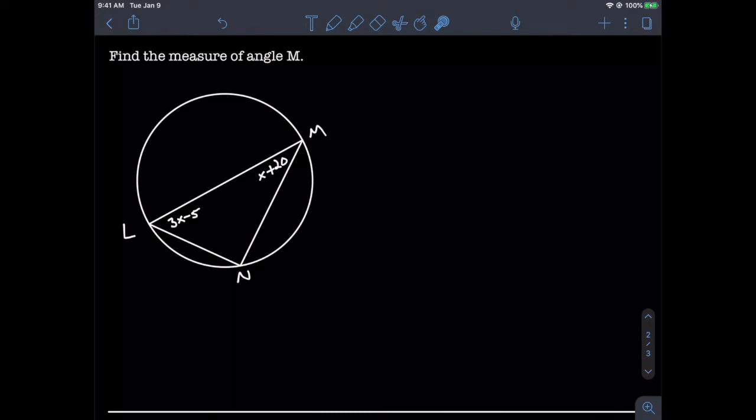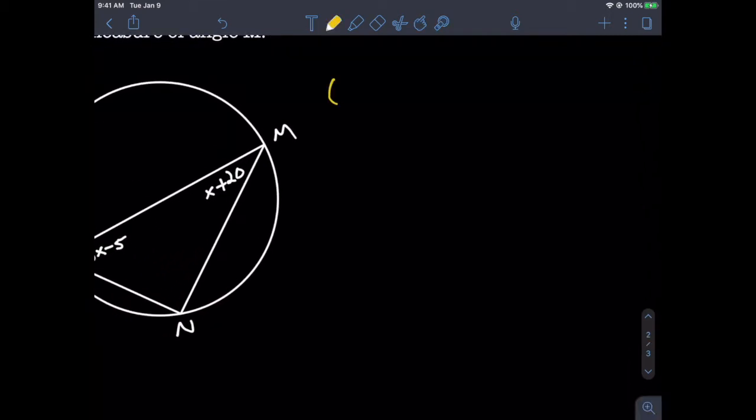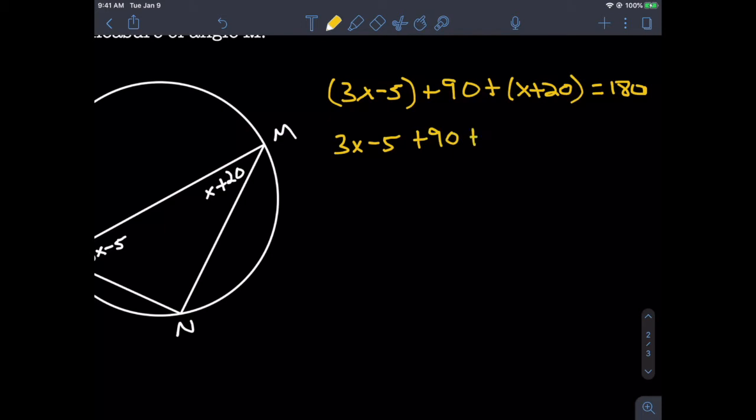When we add all our angles together, we get 180. We have (3x - 5) representing angle L, plus 90 degrees for angle N, plus (x + 20) for angle M, all equals 180. Next, we'll drop these parentheses—they were just there to keep us organized. Now we combine our like terms: 3x + x = 4x, and 90 - 5 + 20 = 105, so we have 4x + 105 = 180.